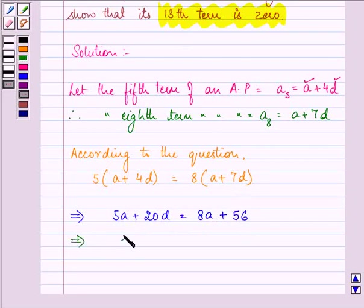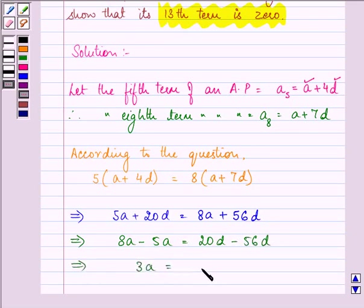Further, we have 8A minus 5A is equal to 20D minus 56D, which further implies 3A is equal to minus 36D.